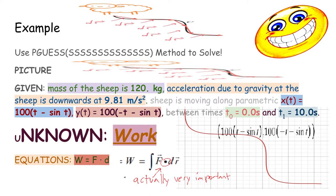We start with the picture of a sheep moving downwards along this curve, and we want to know how much work the earth does on a sheep as it moves. If the mass of the sheep is 120 kilograms, acceleration due to gravity on the sheep is 9.81 meters per second squared.